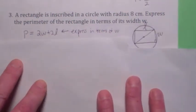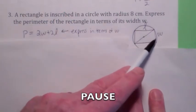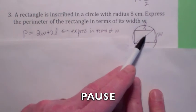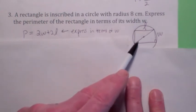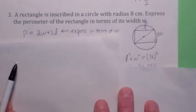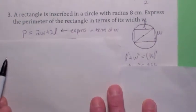If you draw a picture, there is l, there is w, and the radius is 8 centimeters. So from here to here is 8. That means that the diagonal would be 16 centimeters, wouldn't it?